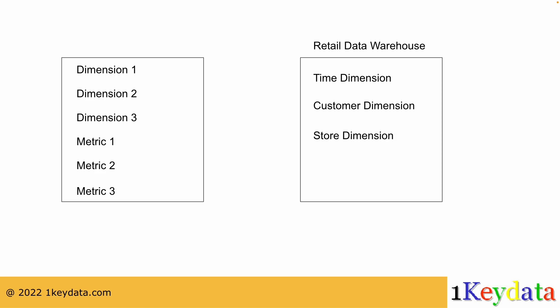A fact table is the intersection of dimensions, often with some additional associated metrics. For example, in a retail data warehouse, a fact table could represent the sales record, and it will commonly have a time dimension, a customer dimension, and a store dimension, plus a sales amount metric.